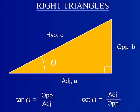The last set of functions shown are the tangent function and its reciprocal, the cotangent function. The tangent function is the ratio of the length opposite the angle of interest, b, over the length adjacent to the angle of interest, a.